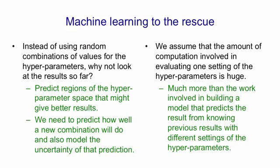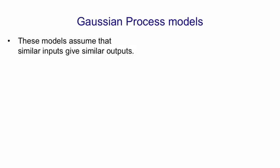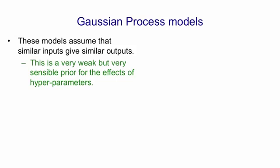So what kind of model are we going to use for predicting the results of future experiments? It turns out there's a kind of model called Gaussian process models. Basically all these models do is assume that similar inputs give similar outputs. They don't have any more sophisticated prior than that, but they're very good at using that prior in an effective way. So if you don't know much about what you expect hyperparameters to do, a weak prior like that is probably the best you can do.